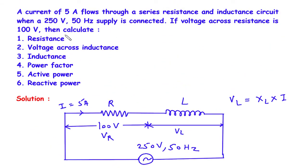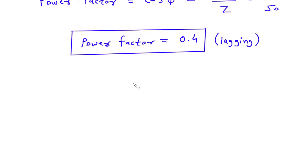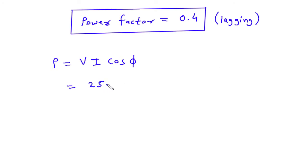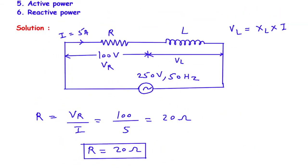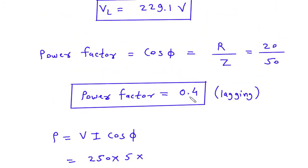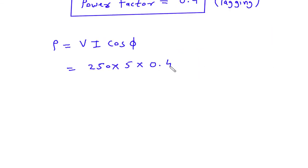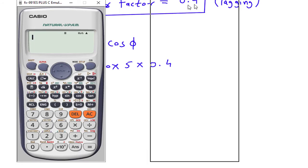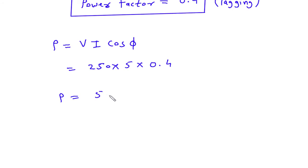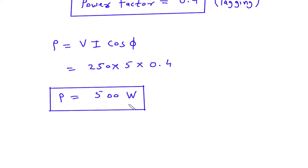Next we have to find active power. The formula for active power is P equals V multiplied by I multiplied by cos φ. The value of voltage is 250V, the value of current is 5A, and the value of cos φ is 0.4. Therefore power equals 250 multiplied by 5 multiplied by 0.4, which is 500 Watt.